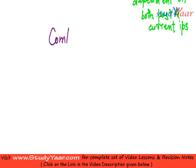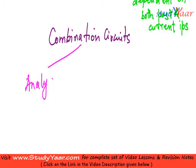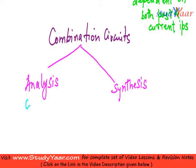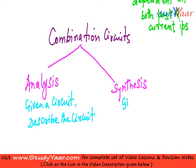There are two aspects to a combinational circuit. You can either analyze — analysis of a combinational circuit — or synthesize — synthesis of a combinational circuit. Analysis is: given a circuit, you have to describe the circuit. Synthesis is: given a description, you construct a circuit.